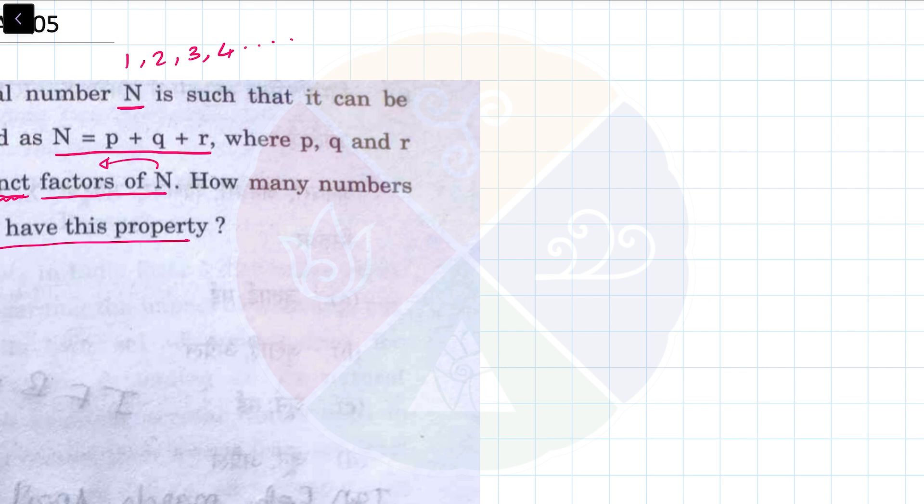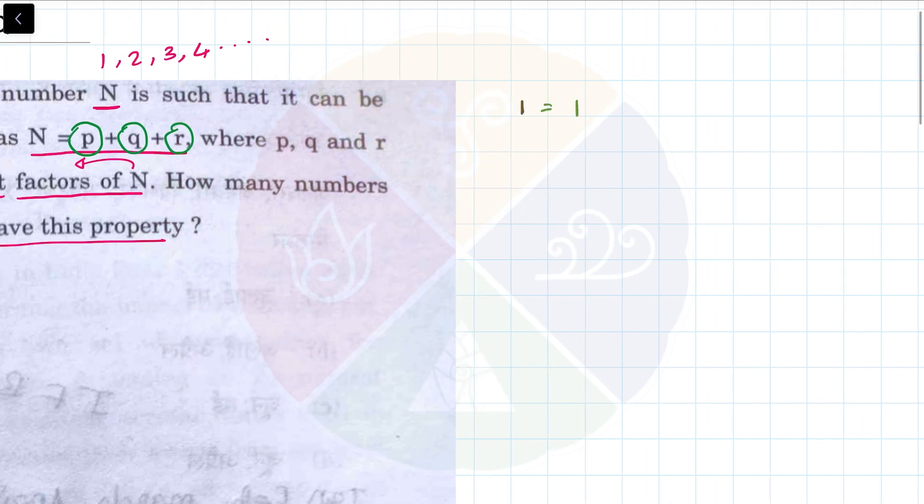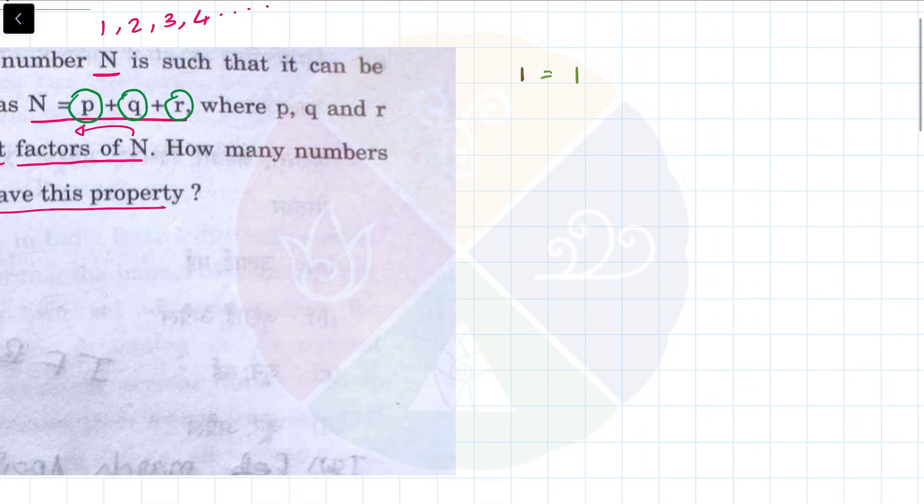Let me check. First of all, the first natural number is 1, but of course I cannot use 1 because I at least need three factors. 1 has only one factor, so 1 cannot be used. In fact, numbers like 2, 3, 5 also cannot be used because they are prime numbers.